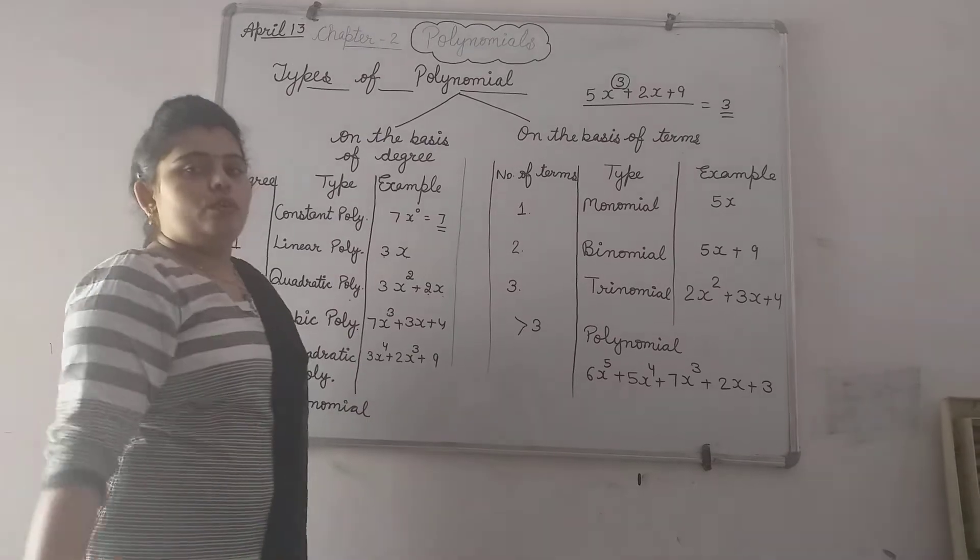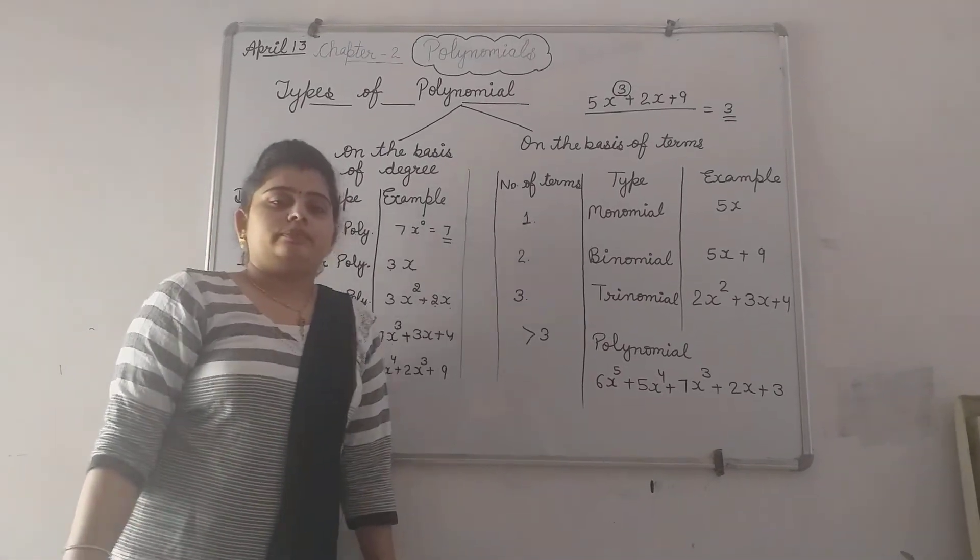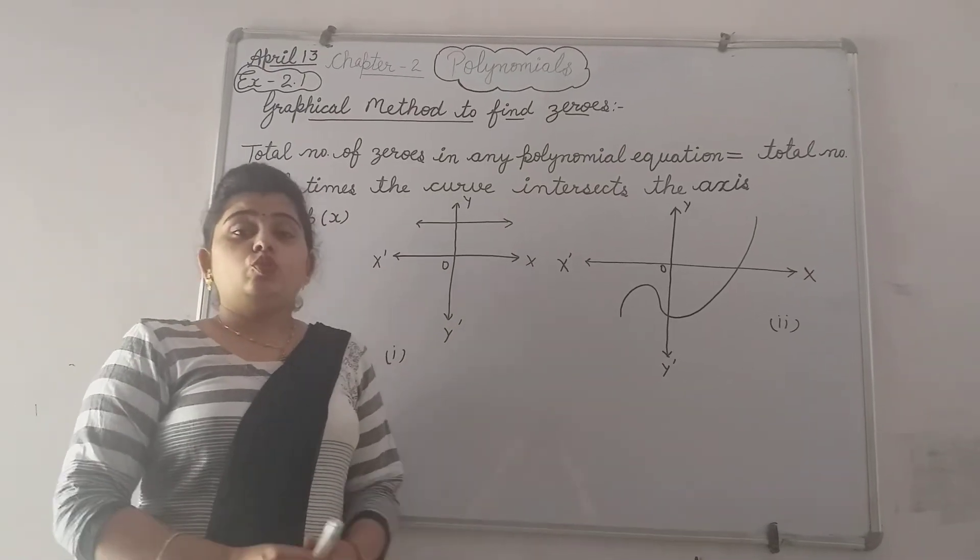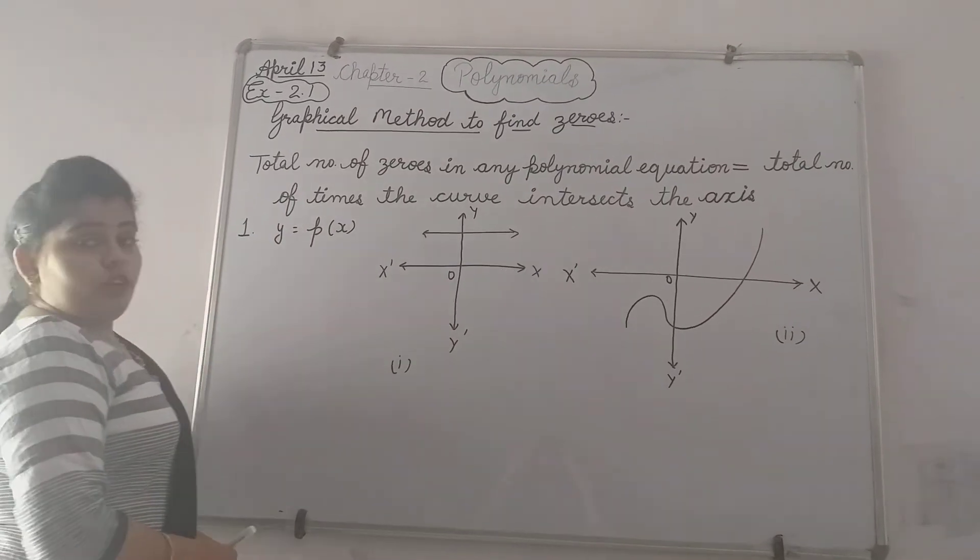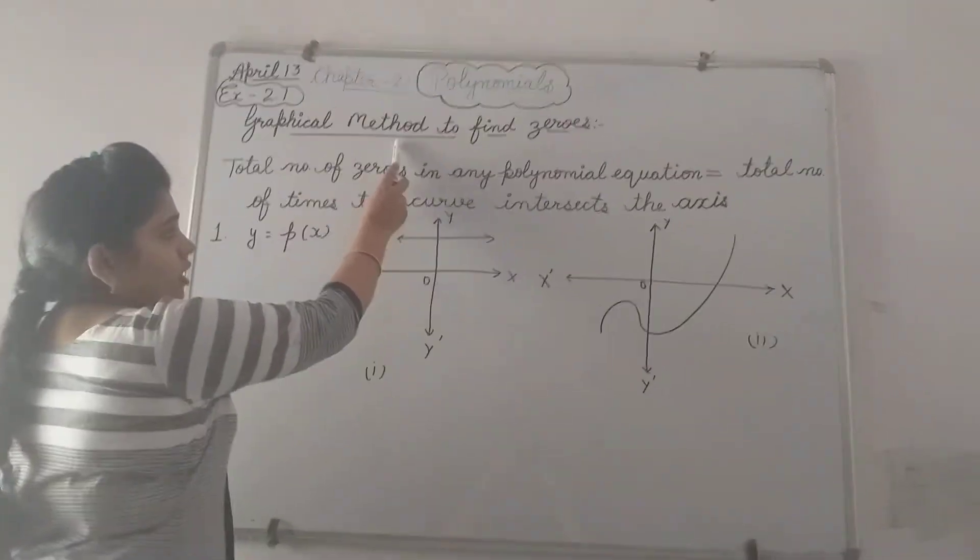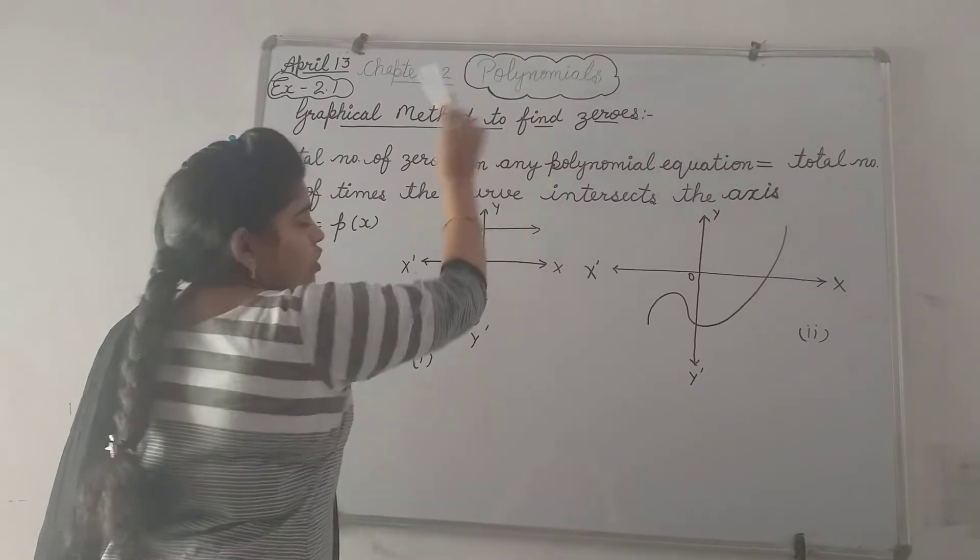All are the part of polynomials. Now let's start our exercise 2.1 in which we will study graphical method to find zeros of a polynomial.